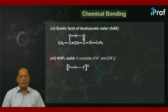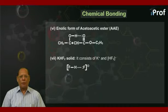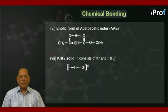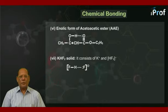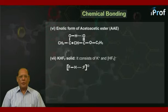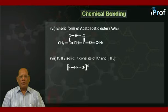The seventh example is potassium hydrogen fluoride, that is KHF2 solid. This is an ionic compound; it consists of K⁺ and HF2⁻ ions. As shown here, the HF2⁻ ion involves hydrogen bonding.